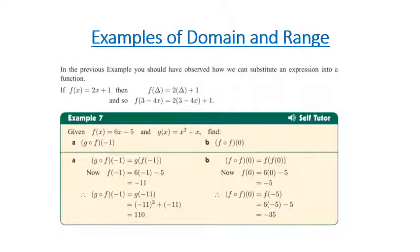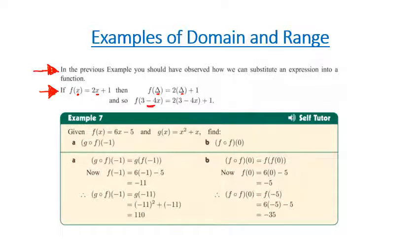Going on from our previous example, we can basically substitute an expression into another function. So if we've got f of x equals 2x plus 1, then f of triangle must be 2 triangle plus 1, or f of 3 take 4x equals 2 lots of 3 take 4x plus 1. We're basically substituting in whatever's in the brackets next to the f into where our variable would be.